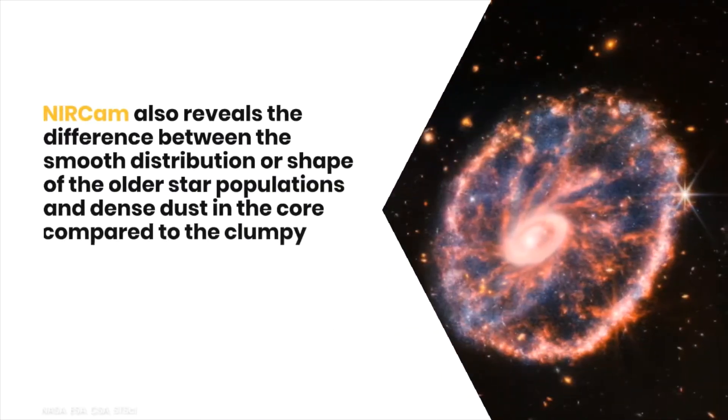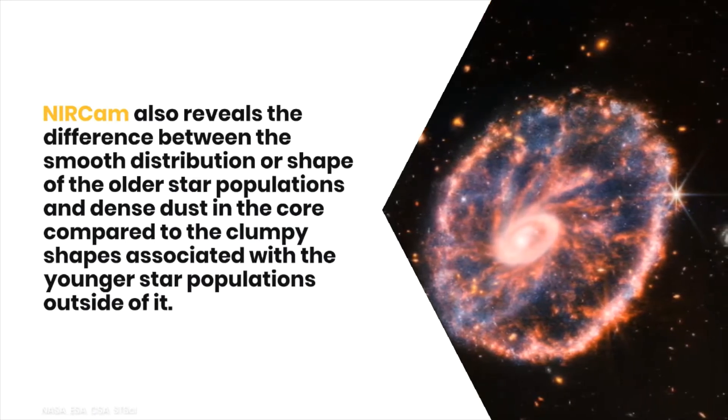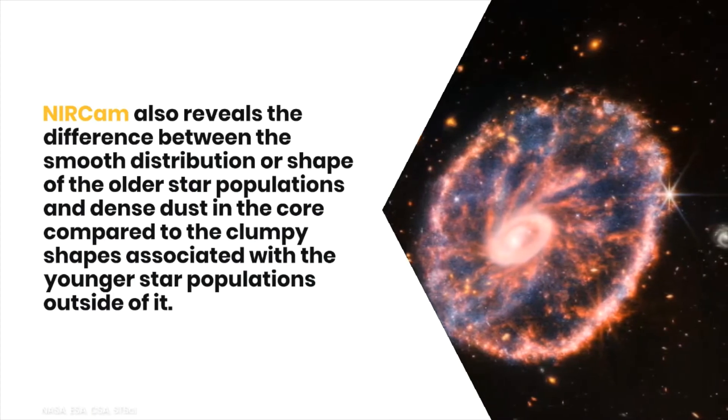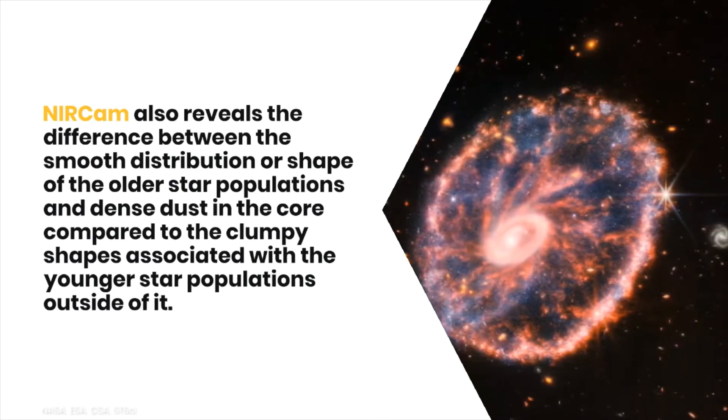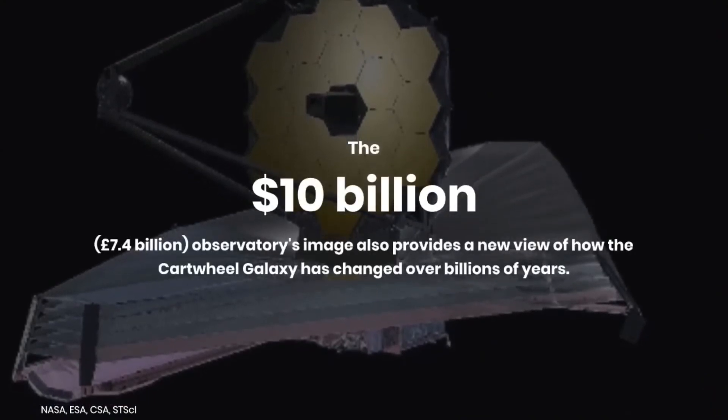NIRCam also reveals the difference between the smooth distribution or shape of the older star populations and dense dust in the core, compared to the clumpy shapes associated with the younger star populations outside of it.